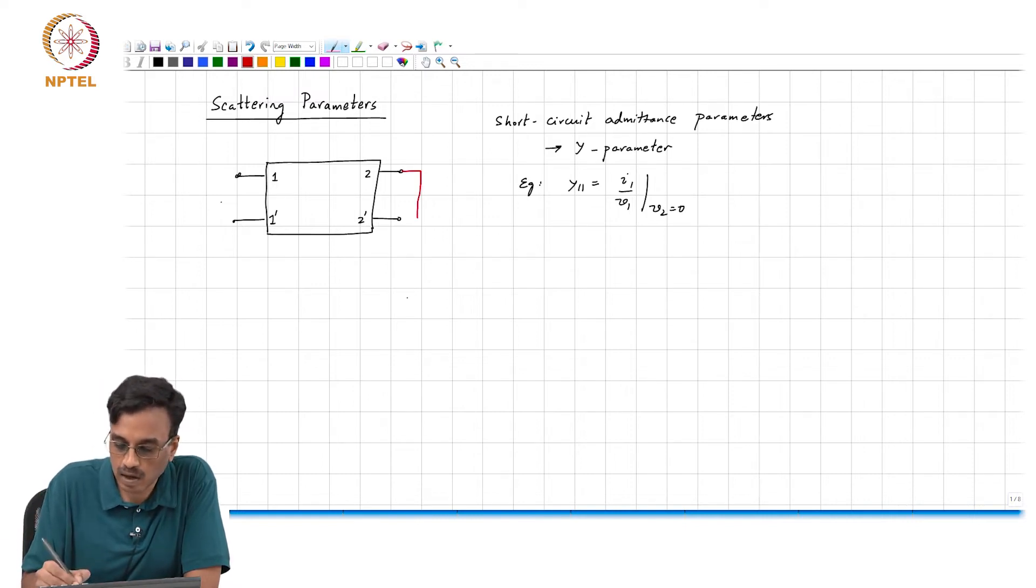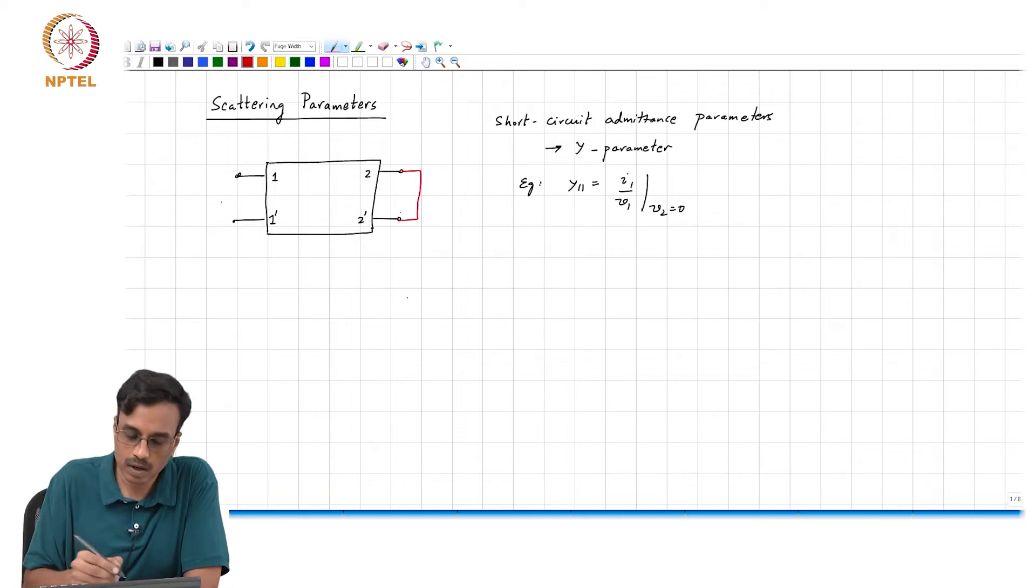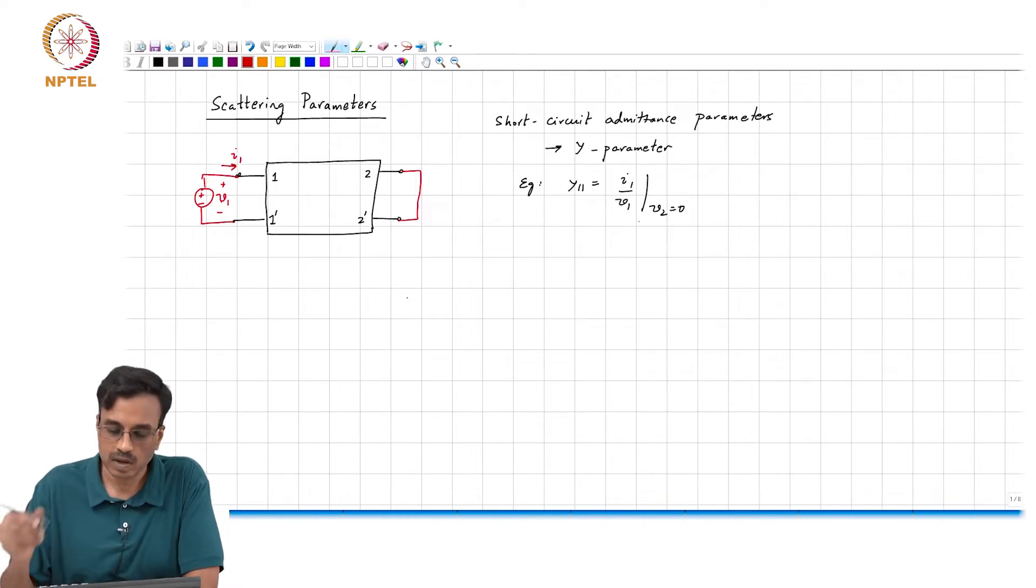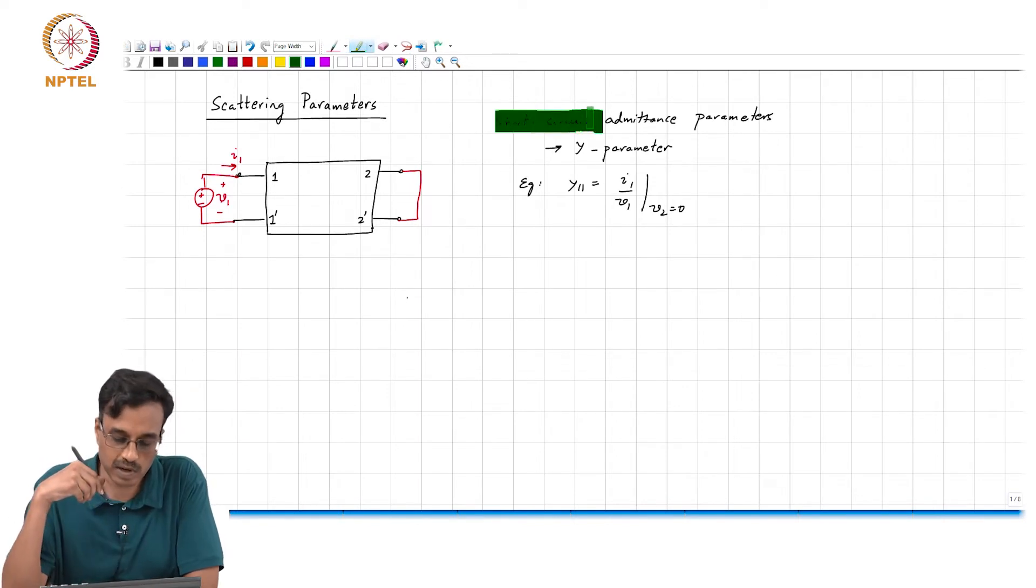So basically, you short circuit the second port and you apply a voltage V1 here and measure I1. The short circuit comes about because the other port is terminated in a short circuit, and I1 by V1 has dimensions of admittance.